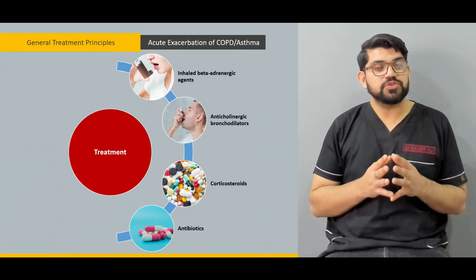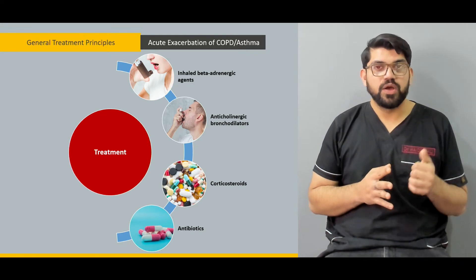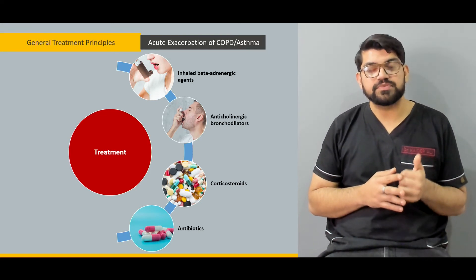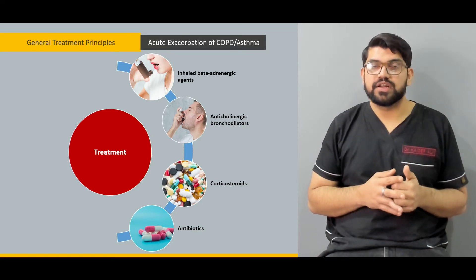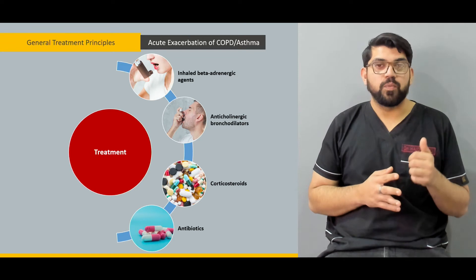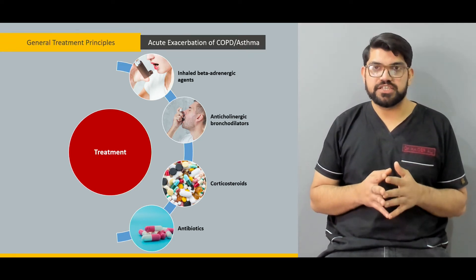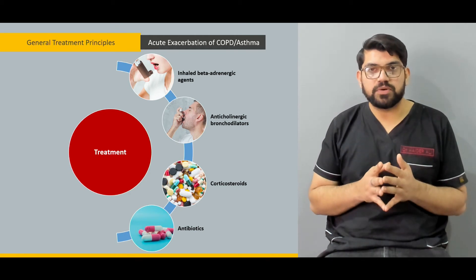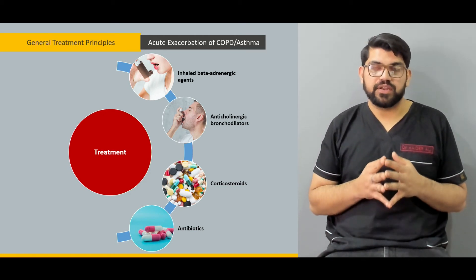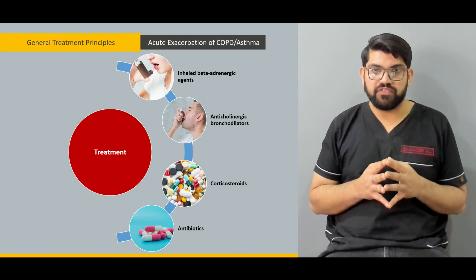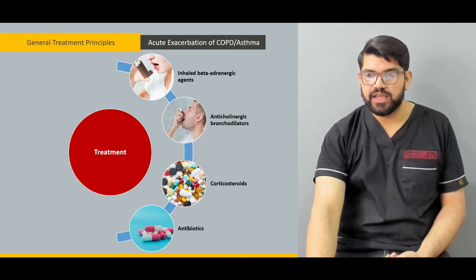We'll then talk about the general treatment principles of acute exacerbation of asthma. What are the signs and symptoms that a patient might present with in acute exacerbation of asthma and chronic obstructive pulmonary disease? What are the treatment remedies you can offer in the emergency department, and what should be considered in patients with life-threatening or impending respiratory failure, especially in patients with acute exacerbation of COPD and asthma?